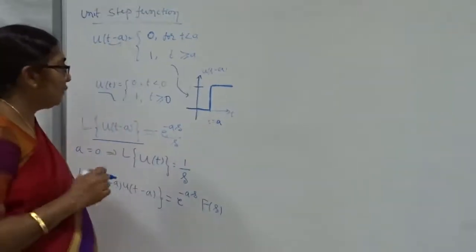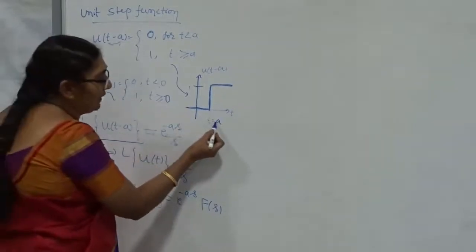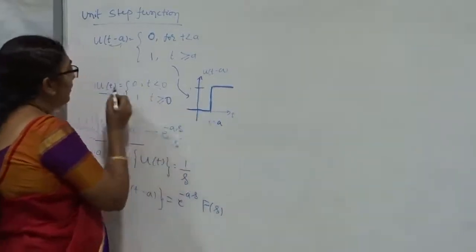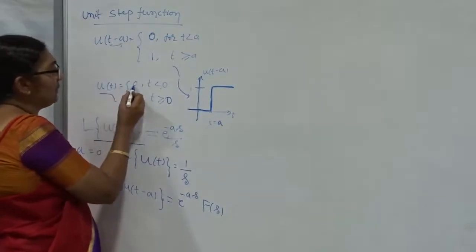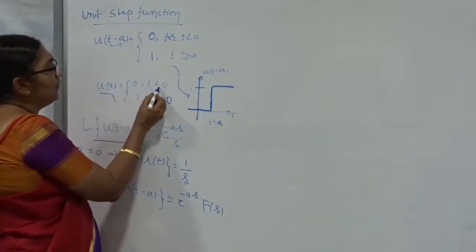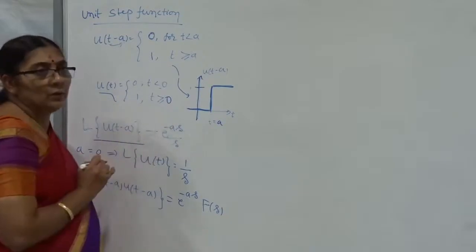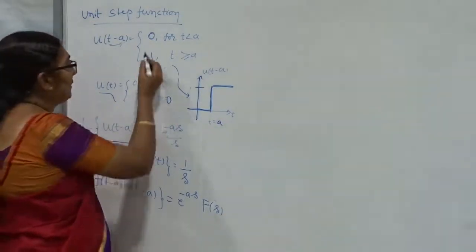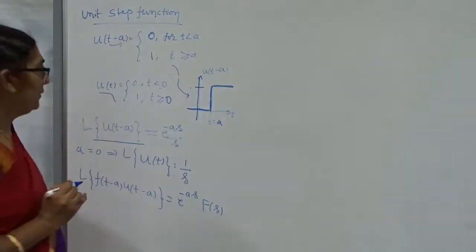Suppose A is not shifted to any point — if A is 0, then U of T (the unit step function) is 0 for T less than 0, and 1 for T greater than or equal to 0. This is nothing but the particular case of the Heaviside function.